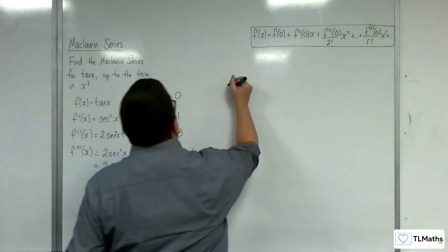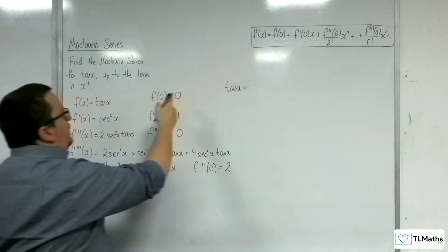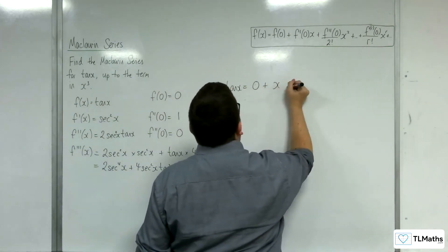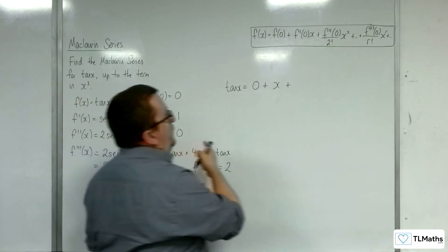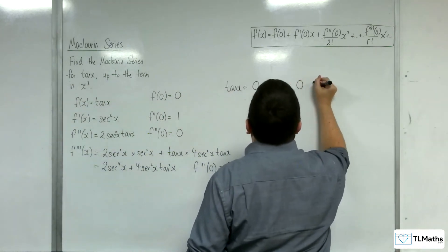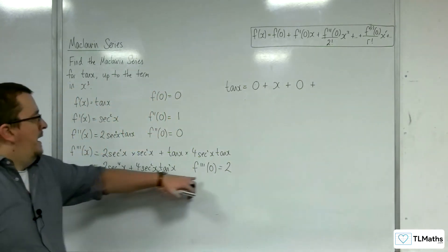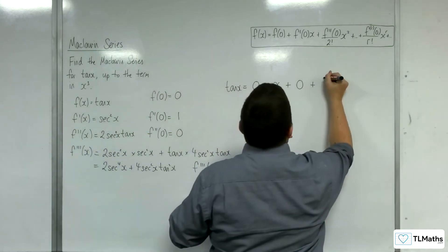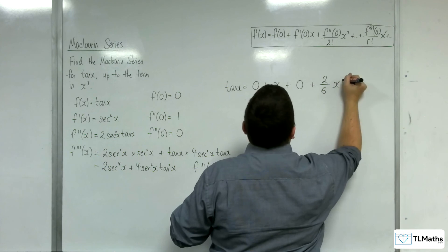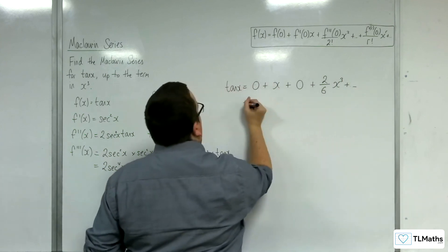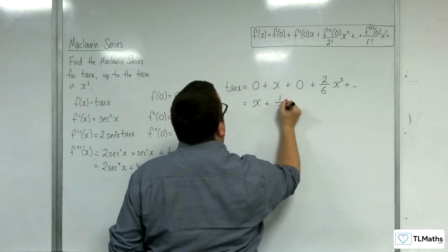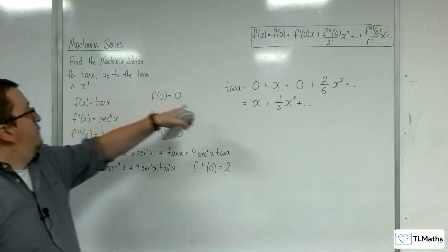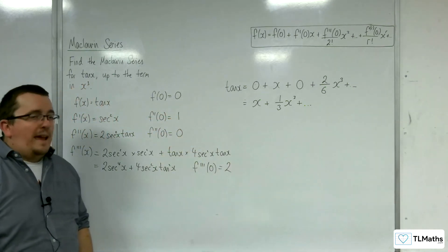So that means that tan x is equal to f of 0, plus f prime of 0 times x, plus f double prime of 0 over 2 factorial times x squared — so that's 0 — plus the third derivative evaluated at 0, which is 2, over 3 factorial x cubed, plus other terms. So we're getting x plus one third x cubed, etc. And so that is the Maclaurin series for tan x up to the term in x cubed.